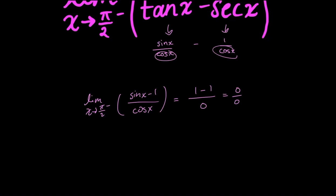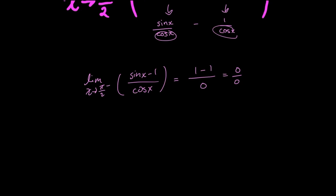L'Hopital's rule tells me when I have this indeterminate form, I take the derivative of the numerator and the derivative of the denominator. I'm writing L'H to show that I'm applying L'Hopital's rule in this step. So the limit as x approaches pi over 2 from the left equals